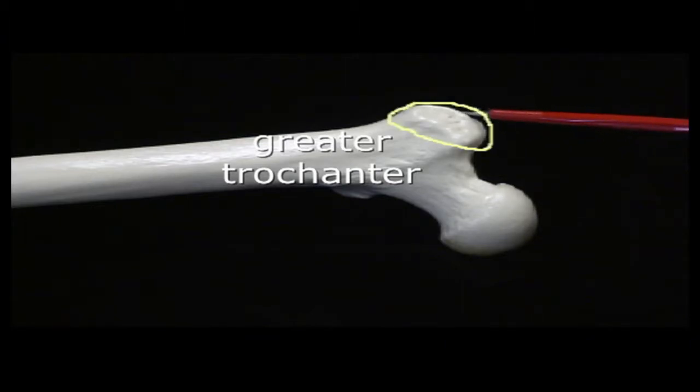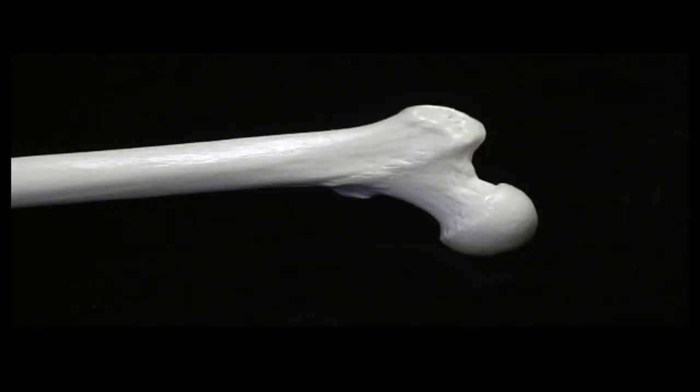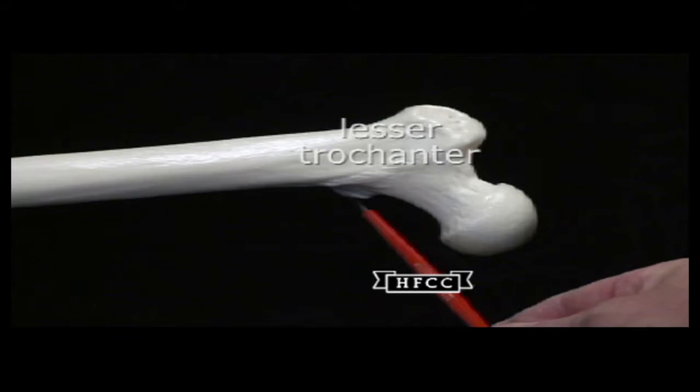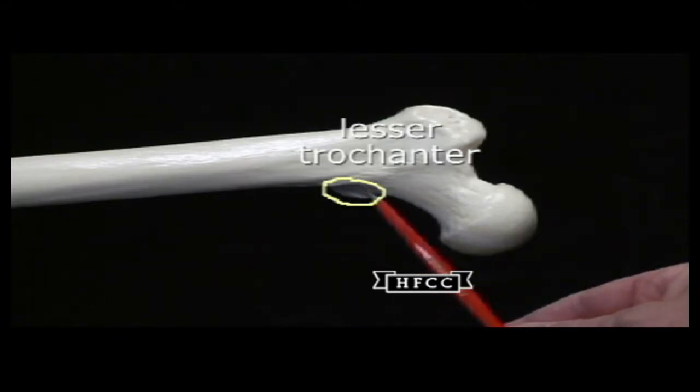Then the bumps, the greater trochanter here, quite large or greater in size than another. That's the one you can feel on the side of your hip, the very large protuberance. And then this smaller one here, more toward the medial aspect, is the lesser trochanter.